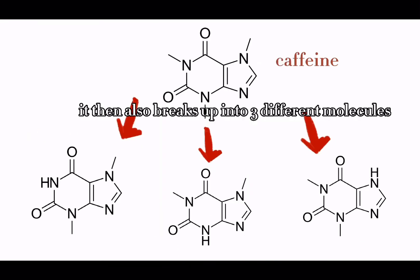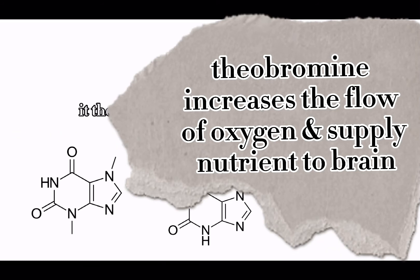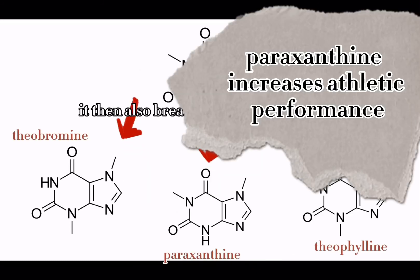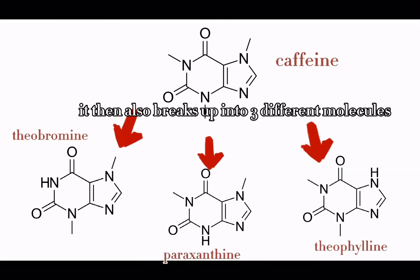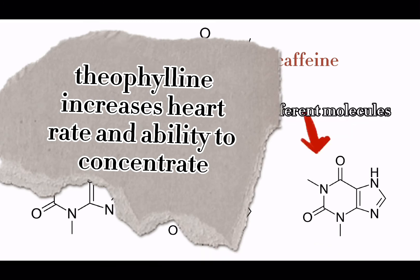These three breakdowns of caffeine promote the state of wakefulness. Theobromine increases the flow of oxygen and supplies nutrients to the brain. As for paraxanthine, it increases athletic performance. And lastly, theophylline increases the heart rate and the ability to concentrate.